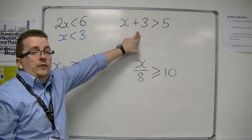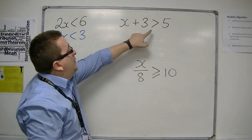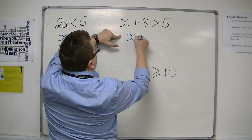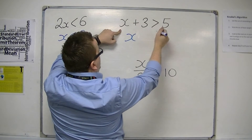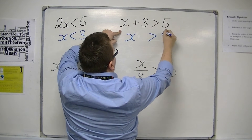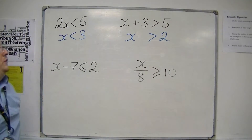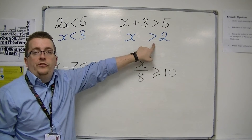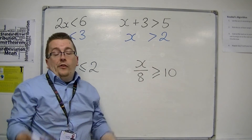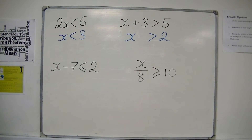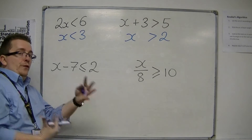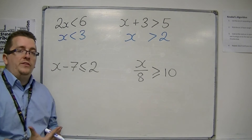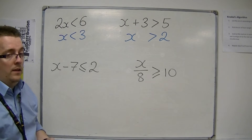x plus 3 is greater than 5. Well, if that was an equal sign, I'd take 3 from both sides, so I do exactly the same thing here. If it had been x plus 3 equals 5, I'd now have x equals 2. It's just that the symbol is different, and that's the thing — you need to get over that worry about the symbol. Treat the inequalities at this stage as if they are equations.